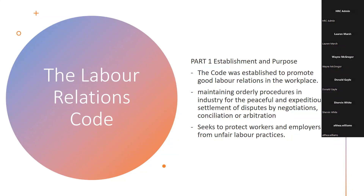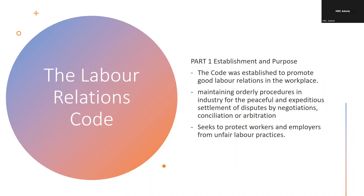Conciliation begins internally with conversations between management and staff. When negotiations fail at the local level, the matter escalates to the Ministry of Labor and Social Security. If unresolved at the conciliation level, it may go to arbitration at the Industrial Disputes Tribunal, and can go further to litigation in the courts. This can be a very lengthy process — it can take years.